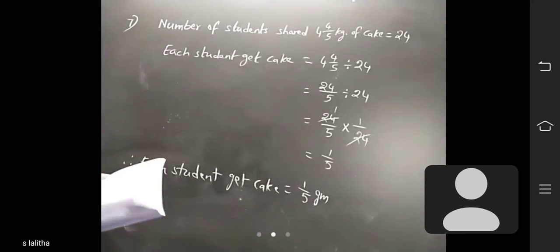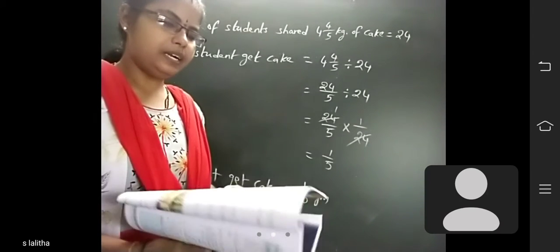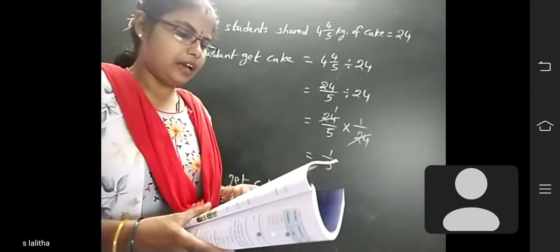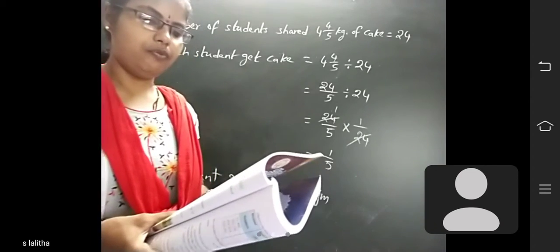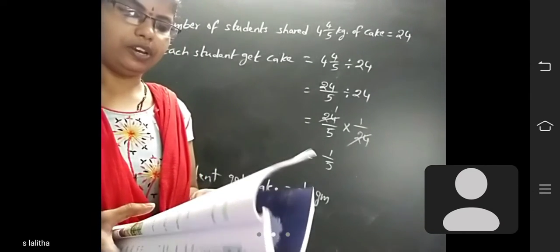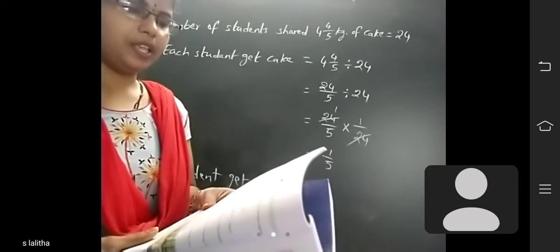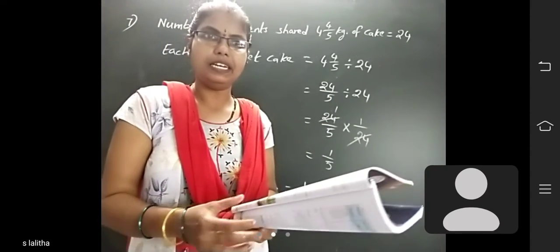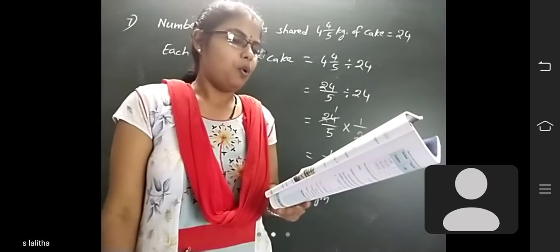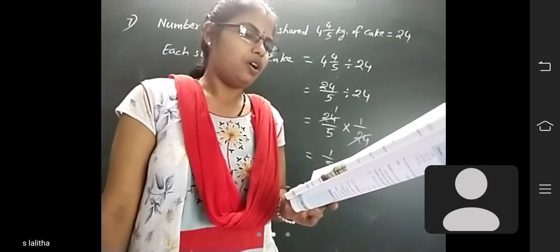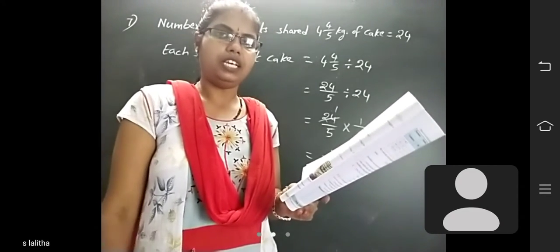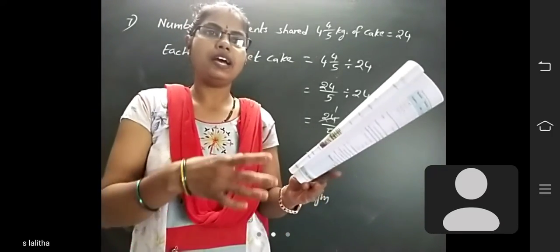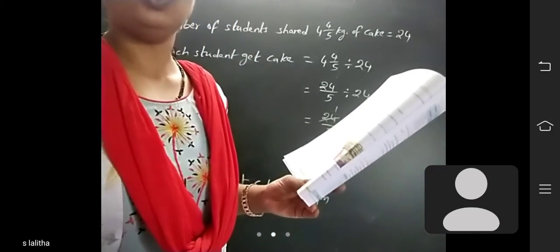Next question: A drum contains 210 litres of water. A boy takes 3 and a half litres each time for watering a plant. Find out how many times he has to take water from the drum.